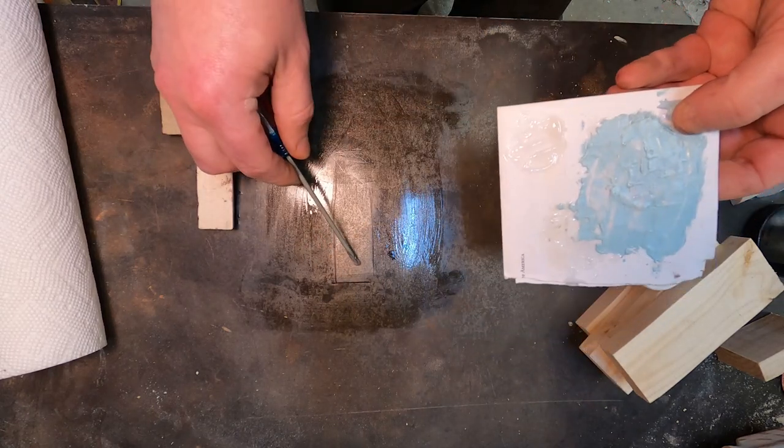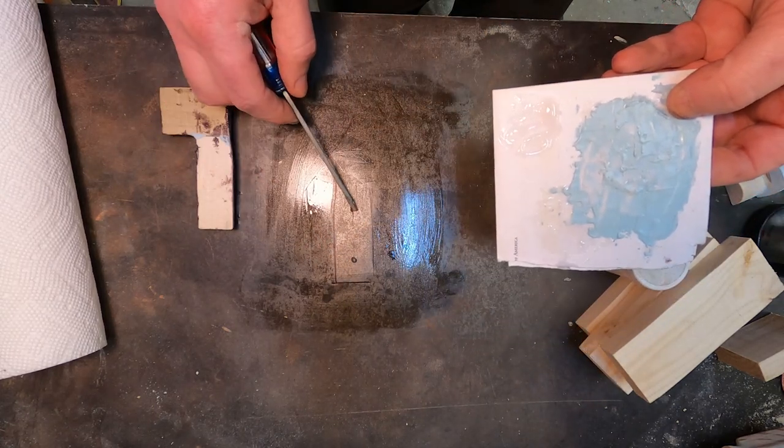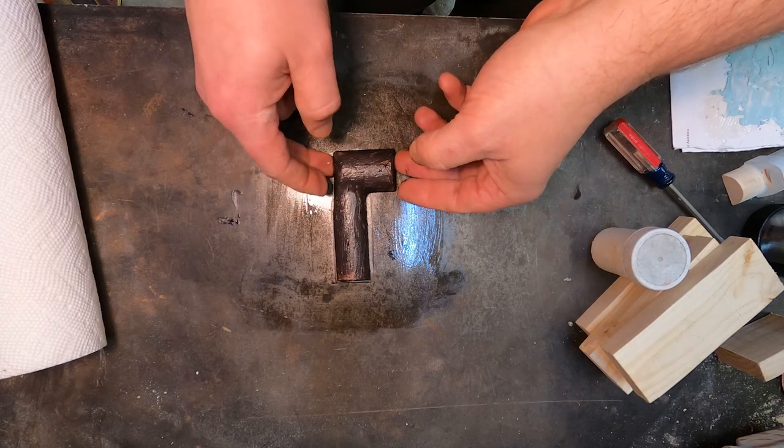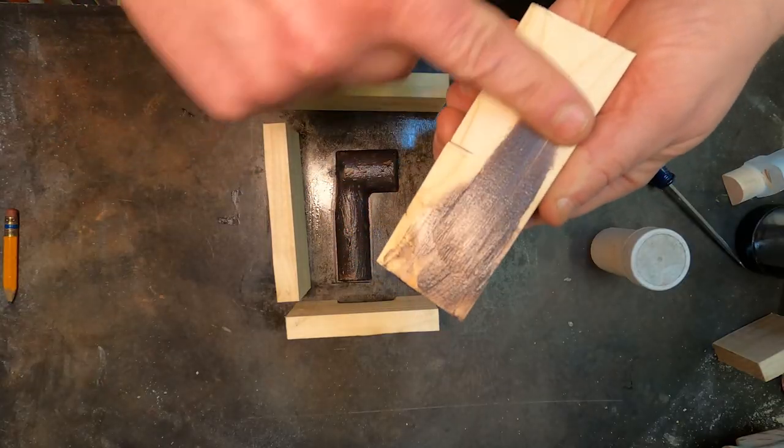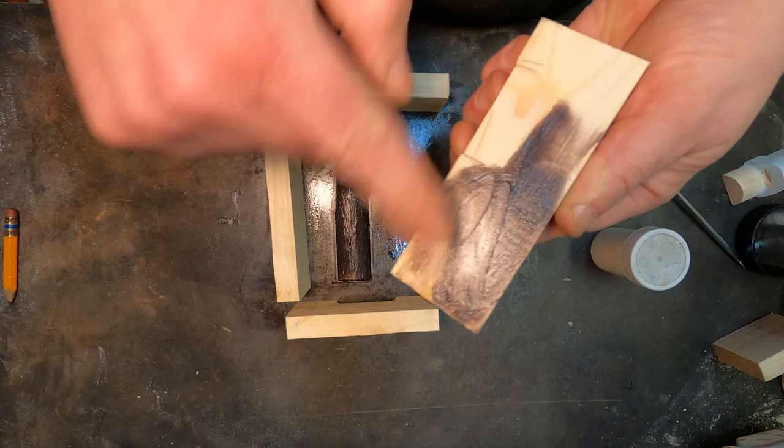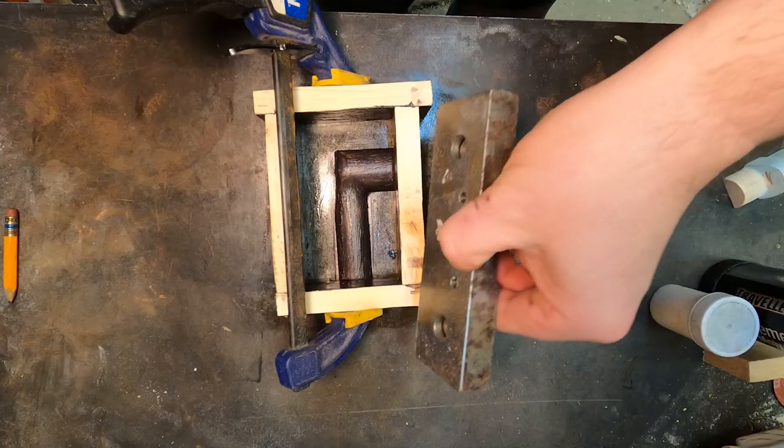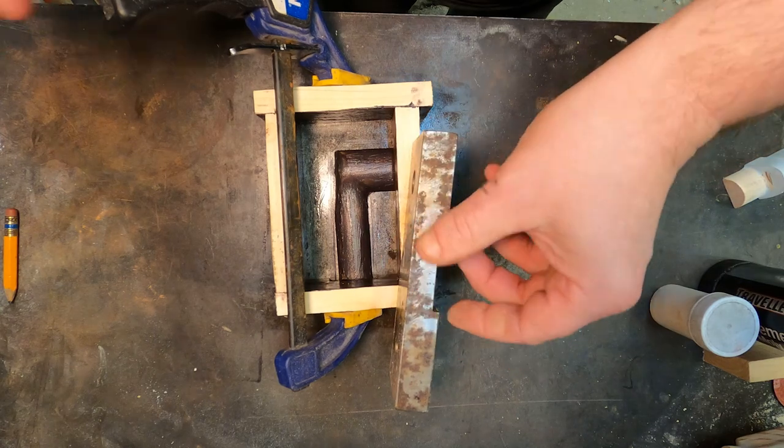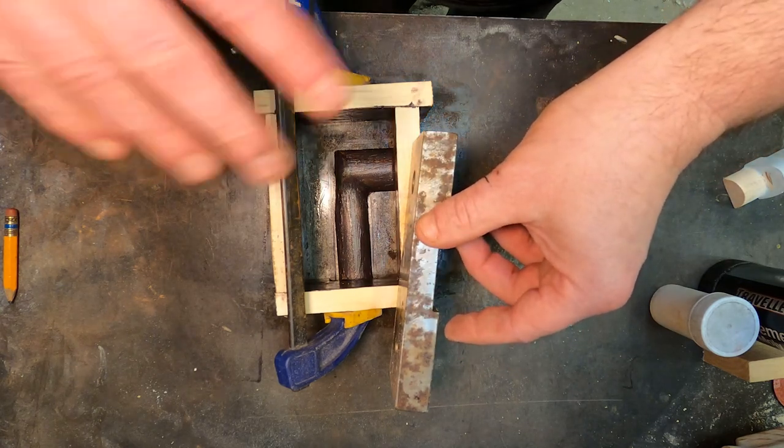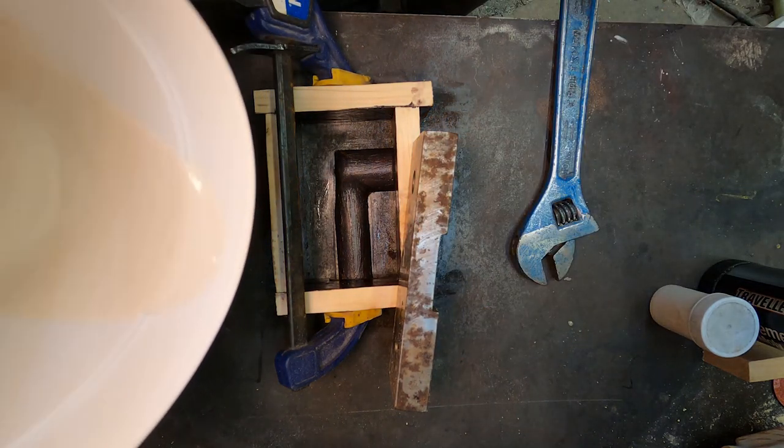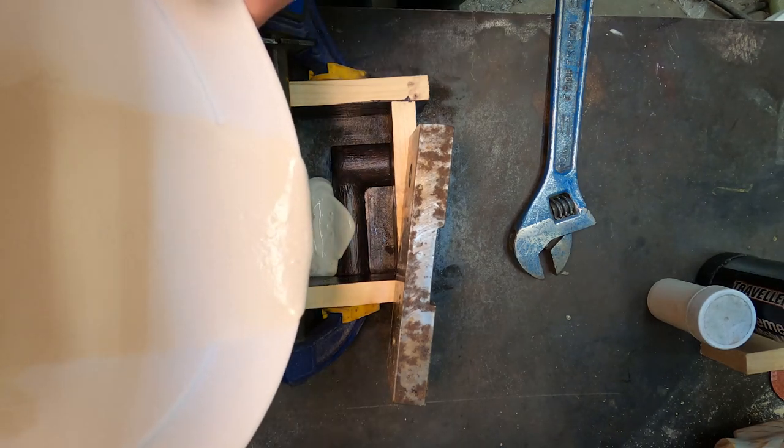So now I got a little bit of glue, a little grease on this wood as well. Put a weight on here just because this clamp is heavy over here. Alright, so I mixed up my plaster. Could have used a smaller container.